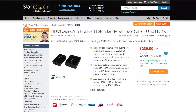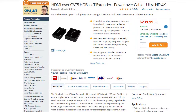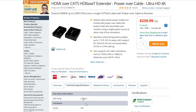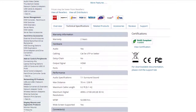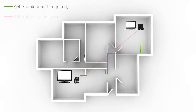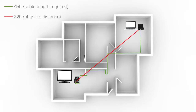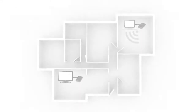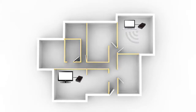You can check the maximum distance a point-to-point video extender can transmit on the individual product page under the technical specifications tab. Keep in mind that for wired extenders, this is the length of the cable run and not the physical distance between the two units. With wireless extenders, the maximum distance can be impacted by any solid object between the transmitter and receiver, such as a wall or floor.